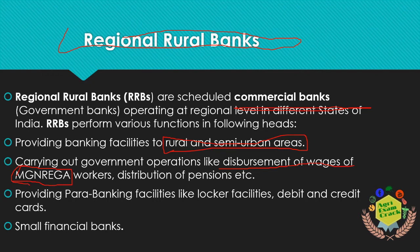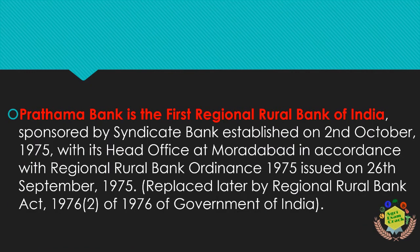RRBs also handle distribution of pensions and provide para-banking facilities like locker facilities and debit and credit cards to rural and semi-urban people. RRBs are funded by public sector banks, state and central governments, and sponsoring banks in different ratios. The first RRB is Prathama Bank, established on 2nd October 1975, with head office at Moradabad, Uttar Pradesh.